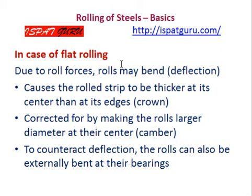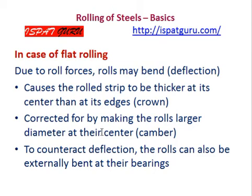In the case of flat rolling, due to rolling forces, the rolls may bend. Deflection of the rolls takes place, causing the edges of the rolled strip to be thicker than at its center. This is the crown of the product. This is corrected by making the rolls of larger diameter at the center, so that by cambering the roll surface to counter the deflection, the rolls can also be externally bent at their bearings.